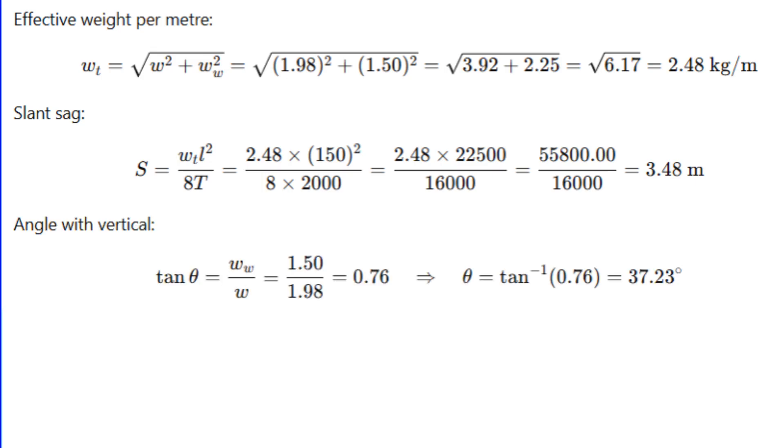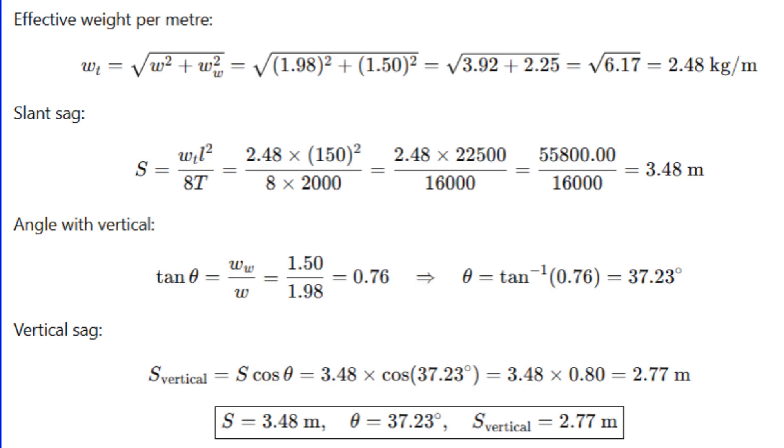Now calculate vertical sag: tan θ = ww/w = 1.5/1.98 = 0.76. θ = tan⁻¹(0.76) = 37.23°. Vertical sag = 3.48 × cos(37.23°) = 2.77 meters. So the vertical sag is about 2.77 meters. Pretty amazing, right?